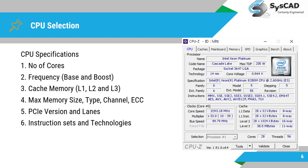Next is cache memory, which is divided into three segments: L1, L2, and L3. L1 is directly accessible to the processor and very close to the compute units. L2 is on top of that, and L3 is on the outer side of L2. Next, check what maximum memory the CPU supports, what type of memory — DDR2, DDR4, DDR5 — the number of channels (quad channel or dual channel), and whether it supports ECC or non-ECC, buffered or unbuffered.